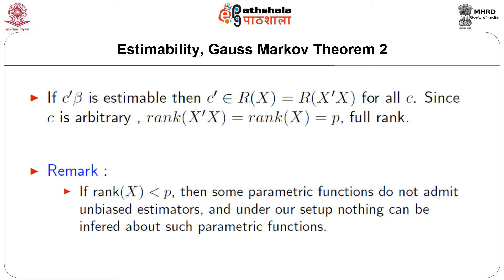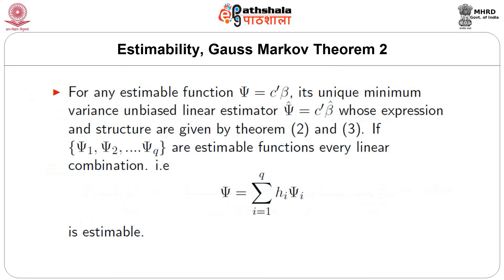If rank of X is greater than p, then something has been done wrongly. For any estimable function Psi equal to c-prime beta, its unique minimum variance linear unbiased estimator is c-prime beta-hat, whose expression and structure are given by the theorems already established. If Psi_1, Psi_2, ..., Psi_q are estimable, then every linear combination Psi equal to summation h_i Psi_i is also estimable.